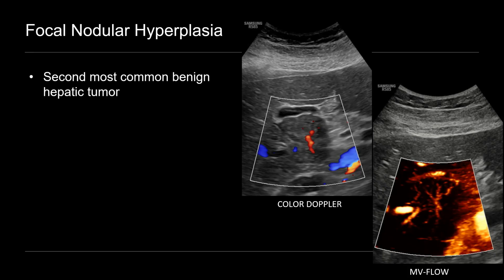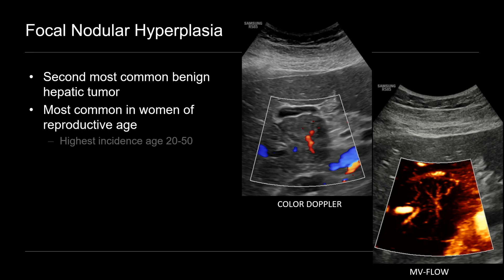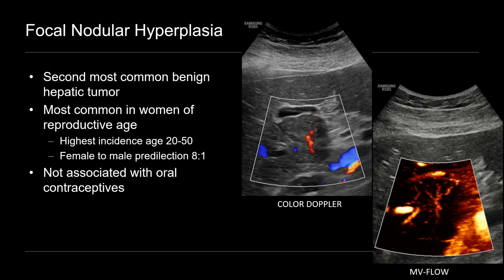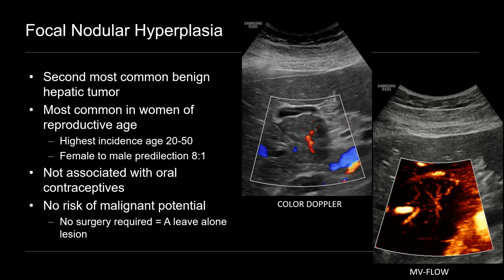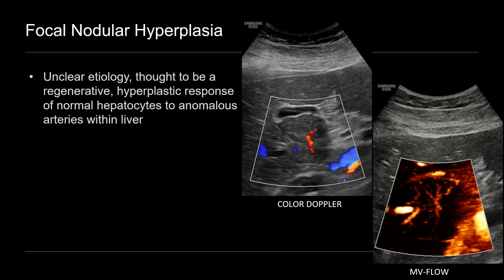FNH is the second most common benign hepatic tumor. Do you know what the most common is? Yes, hemangioma. And it's most common in women of reproductive age, so we see the highest incidence between the ages of 20 and 50. It can occur in males, but it's much more common in females with a ratio of 8 to 1. And unlike hepatic adenoma, it's not associated with oral contraceptive use. There's also no risk of malignant potential, so no surgery is required for these lesions. We consider them leave-alone lesions due to their benignity. And the etiology of FNH is unclear.